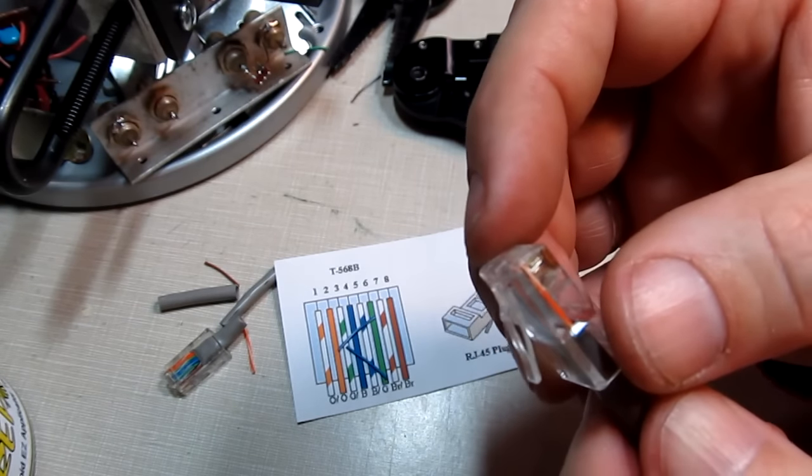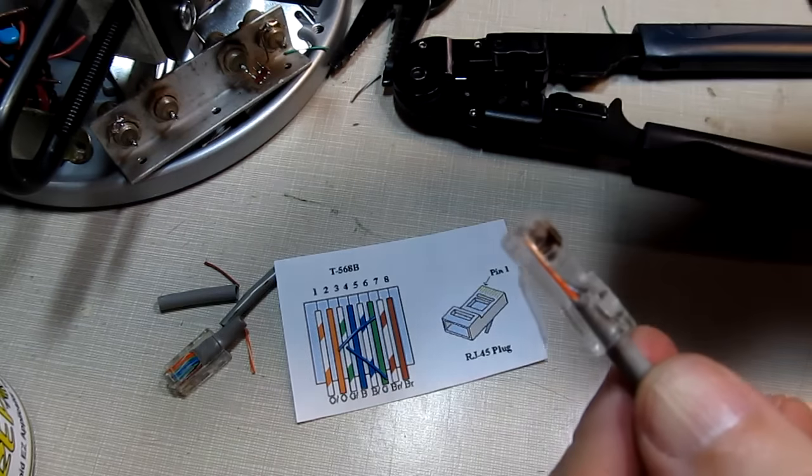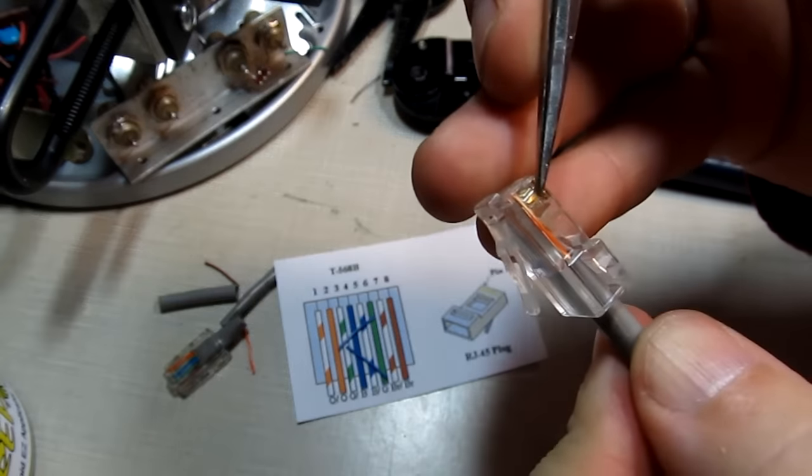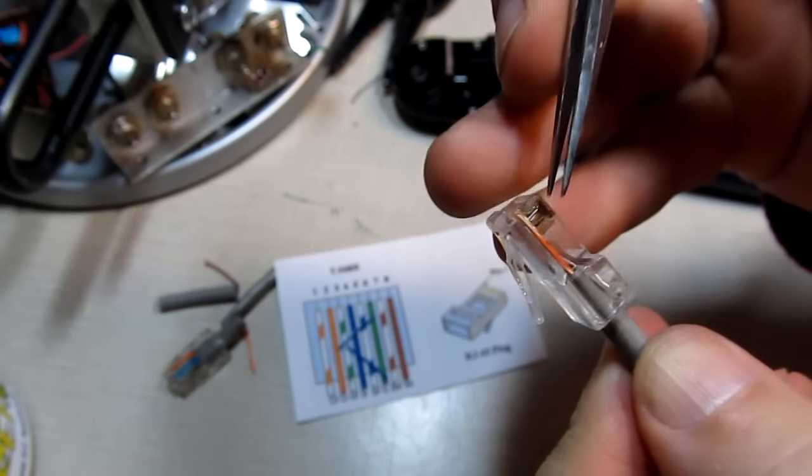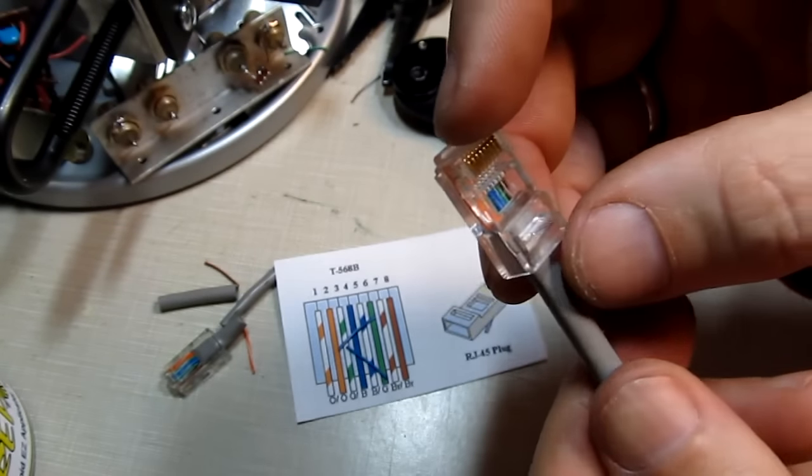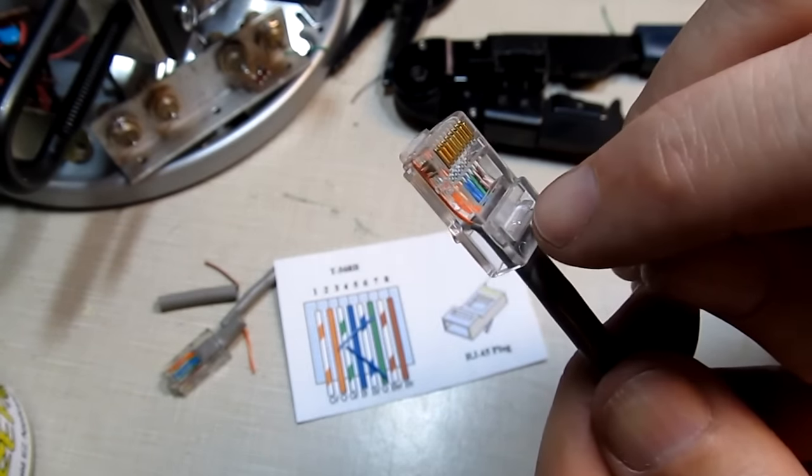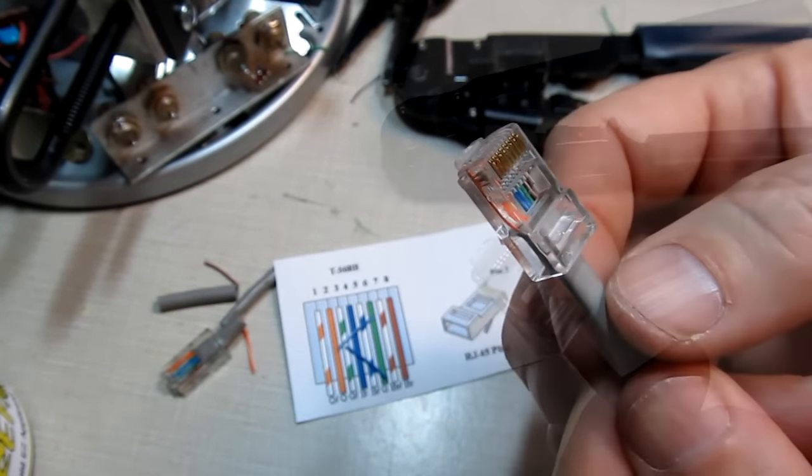Now this is an insulation displacement connector. Each of these little metal tabs here or contacts you might be able to see has a set of pins that kind of pierce through the insulation when the tool is applied here and that's how the connections are made to the wires. And there's also a little plastic tab that gets pushed down and snaps in place and that becomes the strain relief that holds it in place.